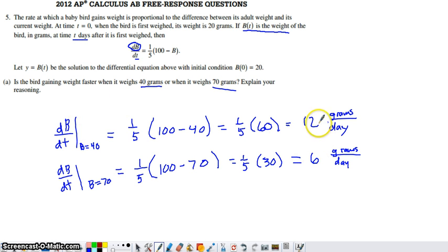So it's gaining 12 grams per day at this weight. It's gaining 6 grams per day at this weight. So is the bird gaining weight faster when it weighs 40 or 70 grams? Well, it's gaining weight faster at a weight of 40 grams.